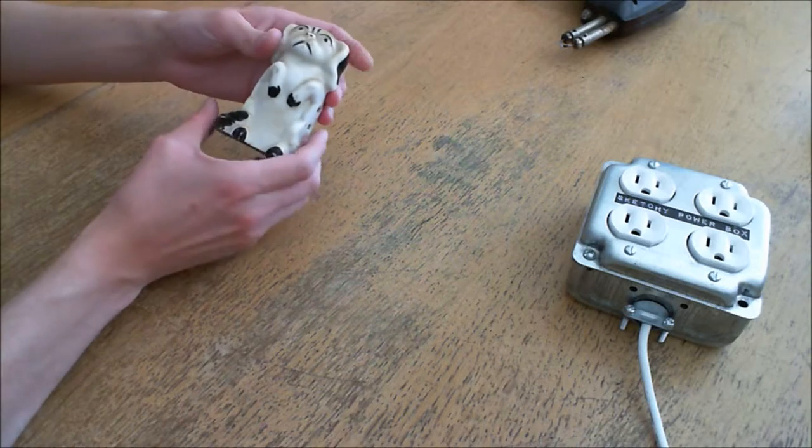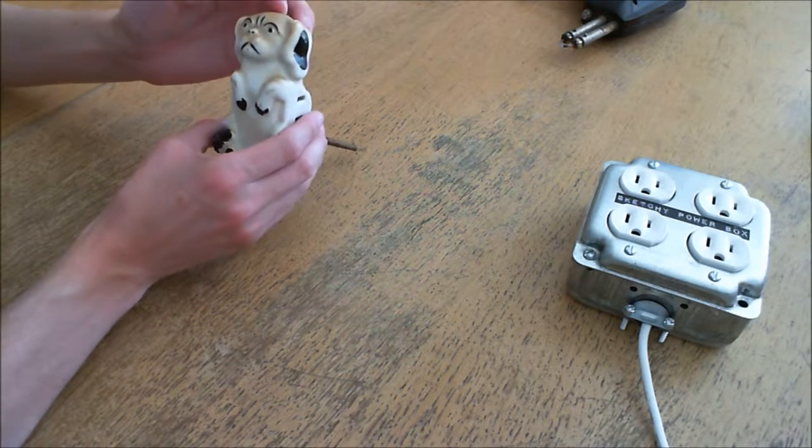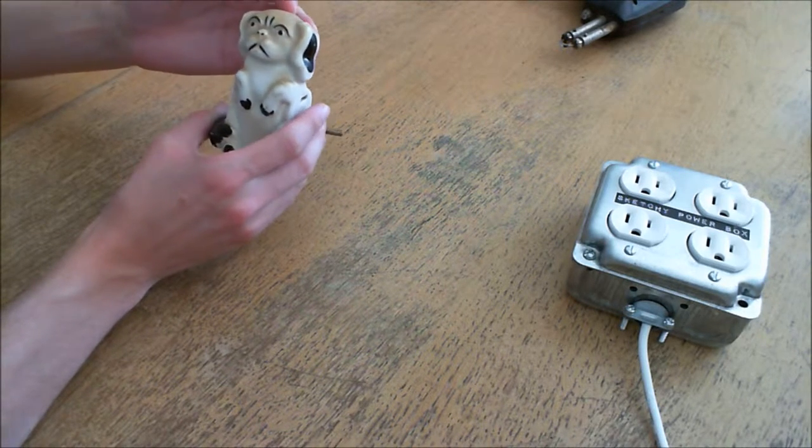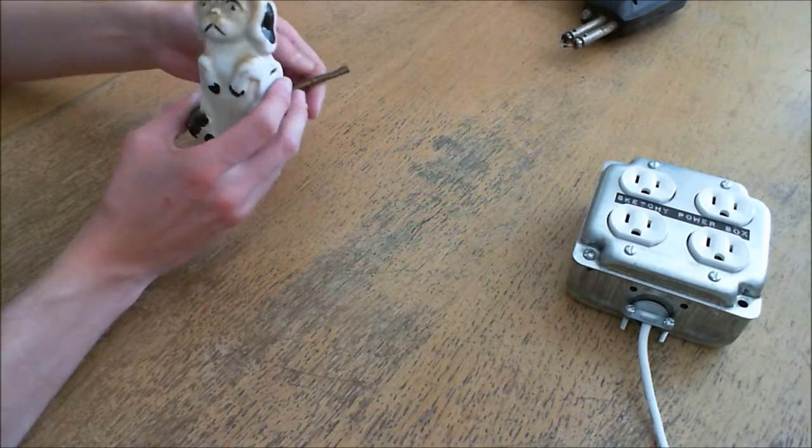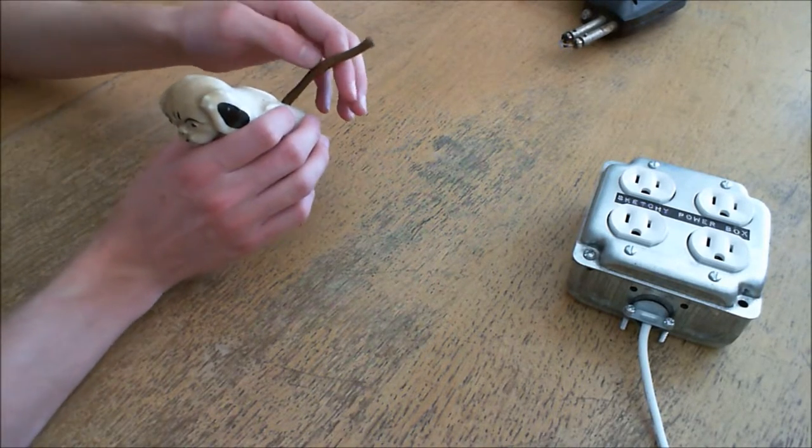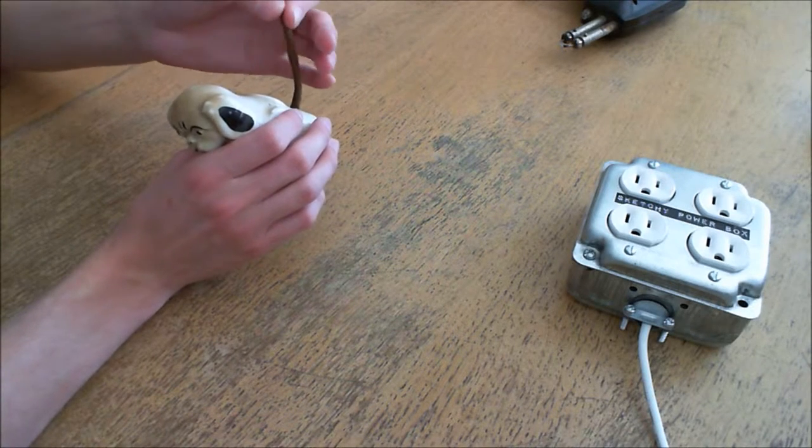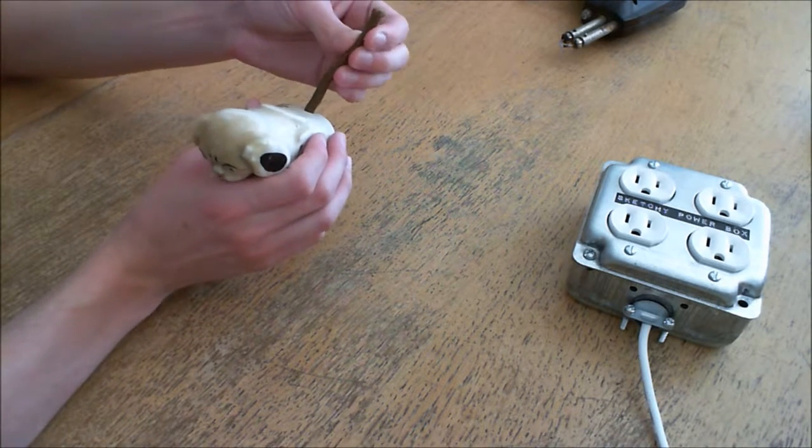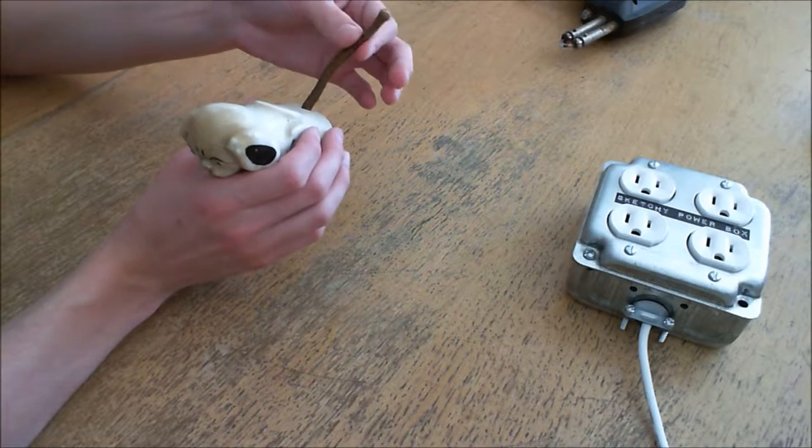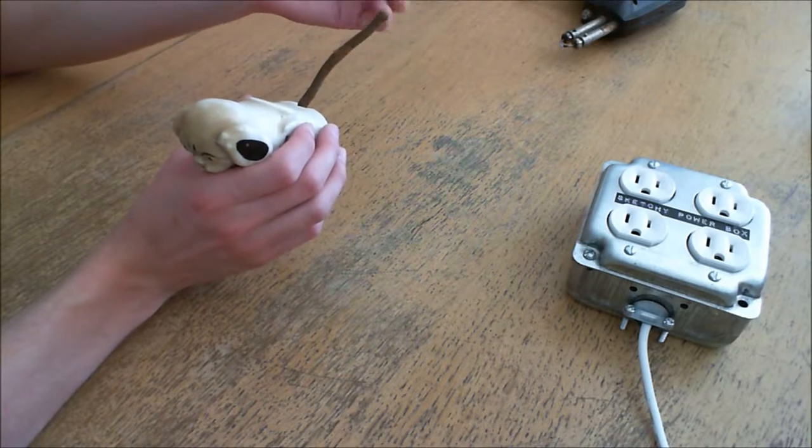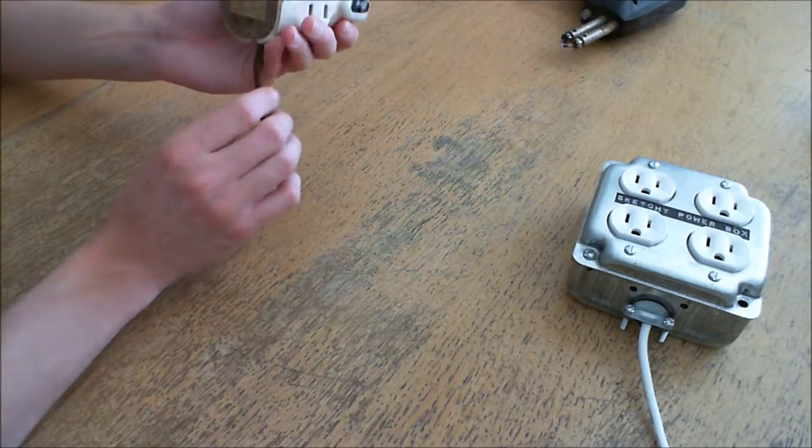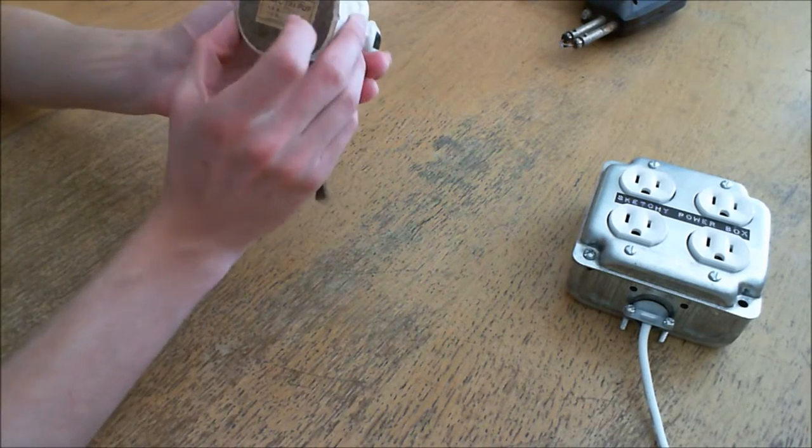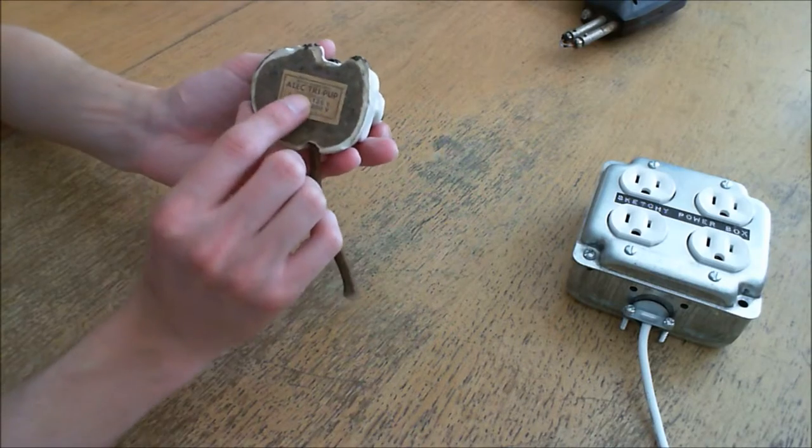This is a little ceramic or porcelain puppy dog, and I came across it as I was actually searching for some vintage power cables. I was looking for 1930s vintage horsehair or cloth wrapped cabling like this, and I came across this little guy and primarily bought him for the cable. As you can see, it's the Electripup.